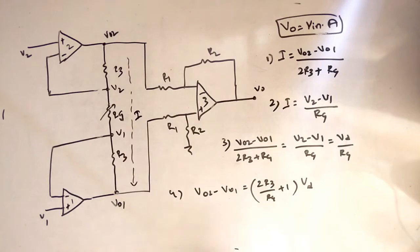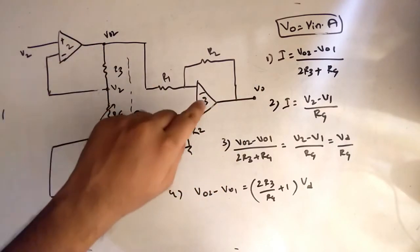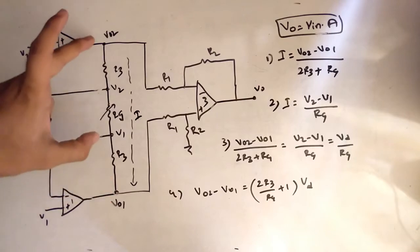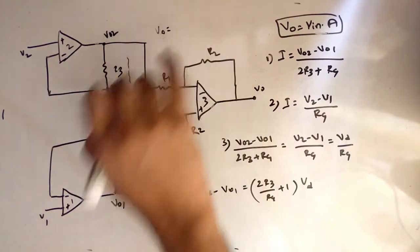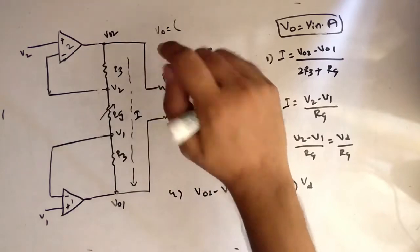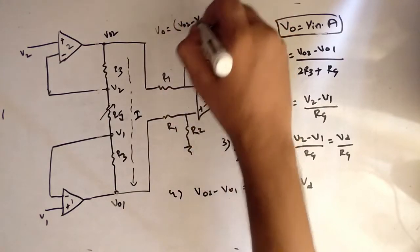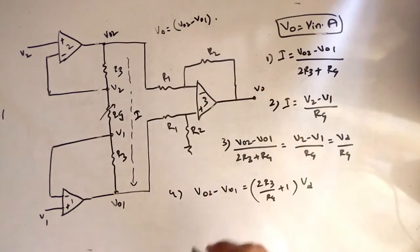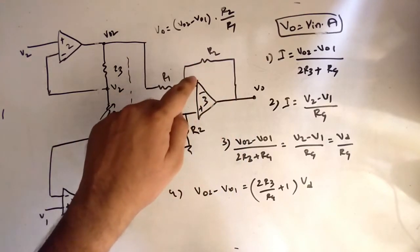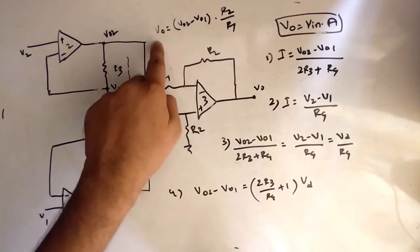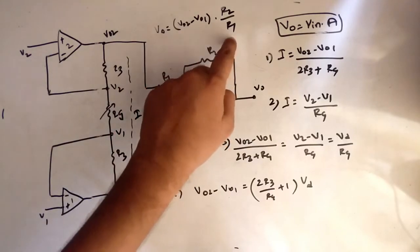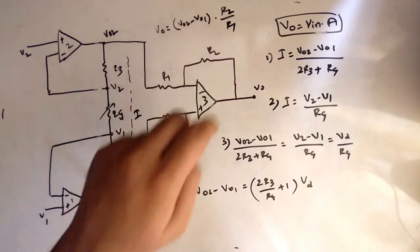Now our task is to find VO. For this op-amp, the input voltages are VO2 and VO1 and the output voltage is VO. Since the op-amp is an amplifier, VO equals the difference in voltage VO2 minus VO1, multiplied by the gain of the circuit. The gain is R2 by R1. So VO equals VO2 minus VO1 into R2 by R1.